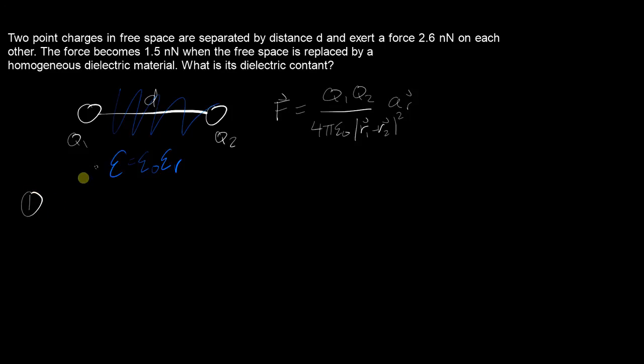first case when there's free space between them, we'll say 2.6 times 10 to the negative 9 newtons equals q1 q2. We don't know their magnitudes but that won't matter in a bit you'll see. Over 4 pi, and for this I'm going to put just epsilon for now, which we will replace a little later.